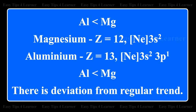For instance, the first ionization energy of aluminium is lower than that of magnesium. The electronic configuration of magnesium is [Ne]3s² and that of aluminium is [Ne]3s² 3p¹.